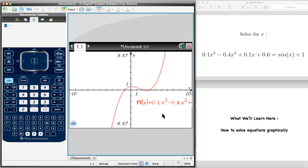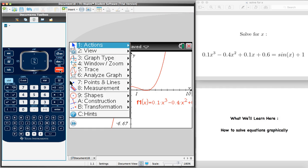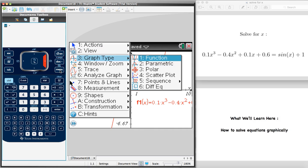We now have to add a second curve, which will correspond to the right hand side of the equation. And so to add this second curve, we press on menu. And we're going to select the third option, graph type. And since we know the curve's equation, we select the first option, function.